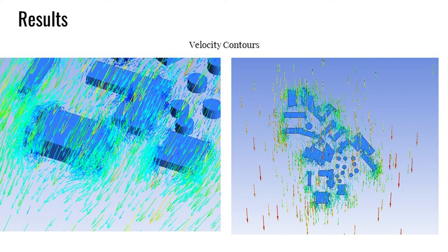These are velocity contours — we weren't really concerned with pressure or anything else. This is the area of interest right here. It's a bit hard to see, but you can see how the wind wraps around through the Undergraduate Advising Center and comes through here and around the library. There are more results as well.